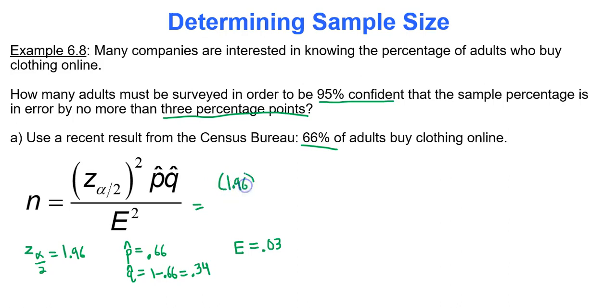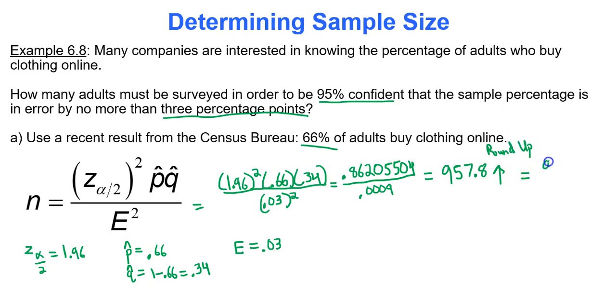Now all you have to do is plug and chug. You have 1.96 squared times 0.66 times 0.34 over 0.03 squared. It's up to you to do this calculation. Use a calculator. But on top, I got 0.86205504, and on the bottom, I got 0.0009. So you divide these two things and you get 957.8 for the necessary sample size. Remember you must always round up. And you need a sample size of 958 people. That's in order to meet those requirements and to have that certain error bound.